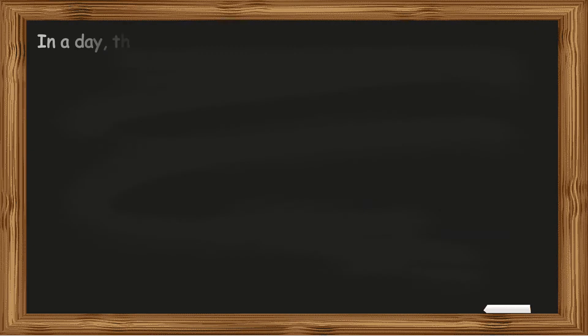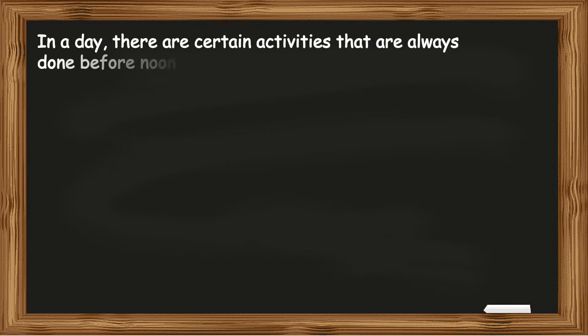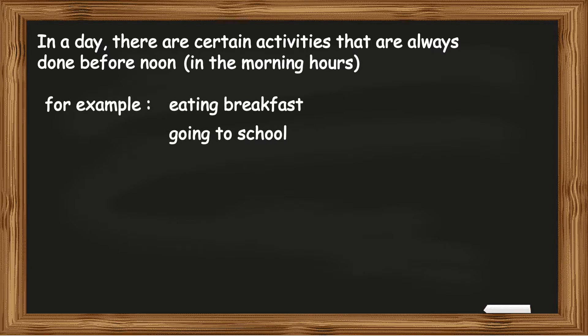In a day, there are certain activities that are always done before noon in the morning hours. For example, eating breakfast or going to school. If you are told Meera eats her breakfast at 7 o'clock, it means she has her breakfast at 7am or if she goes to school at quarter past 8, it means that she goes to school at 8:15am.